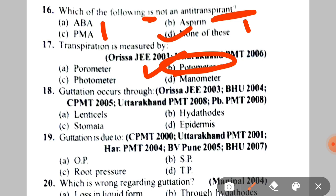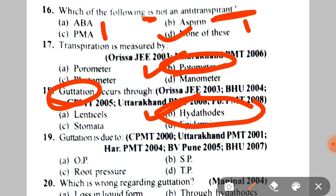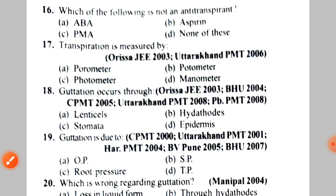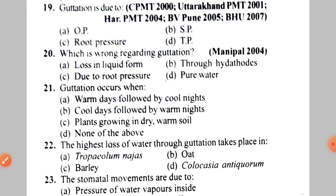Next: guttation occurs through A. Lenticels, B. Hydathodes, C. Stomata, D. Epidermis. The correct answer is B — hydathodes. Guttation is an uncontrolled phenomenon in plants where water absorption rate is high but transpiration rate is low. Water loss occurs through specialized cells called hydathodes at leaf margins. In transpiration, water is lost as vapor, but in guttation it is lost in liquid form.